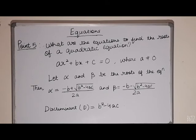Let's move on to the next point. What are the equations to find the root of a quadratic equation? Given is the quadratic equation ax square plus bx plus c equals 0 where a is not equal to 0. Assuming that alpha and beta be the roots of the equation, then alpha equals minus b plus square root of (b square minus 4ac) upon 2a, whereas beta equals minus b minus square root of (b square minus 4ac) upon 2a. It can be seen that the roots of the equation depend upon the value of b square minus 4ac. Therefore, b square minus 4ac is also known as the discriminant of the quadratic equation ax square plus bx plus c equals 0.